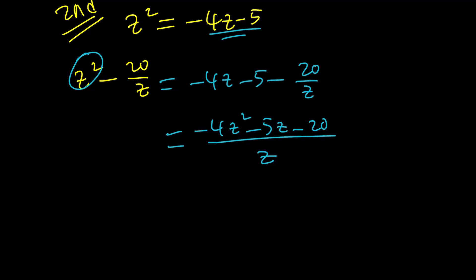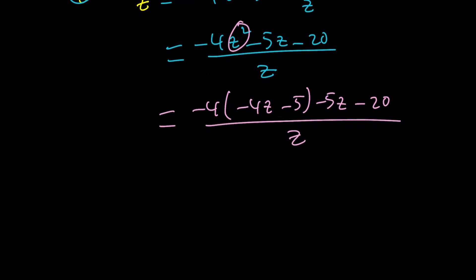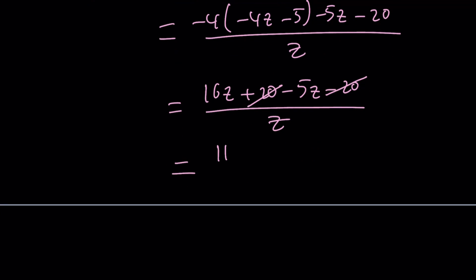And now we can do this one more time. Replace the z squared with what? Negative 4z minus 5. And then minus 5z minus 20 divided by z. And that will become 16z plus 20 minus 5z minus 20 all over z. 20 cancels out. We end up with 11z over z.